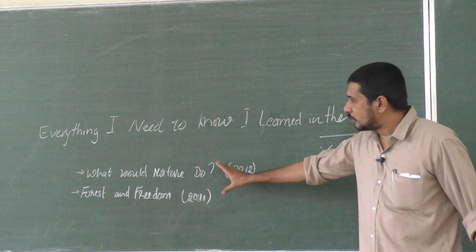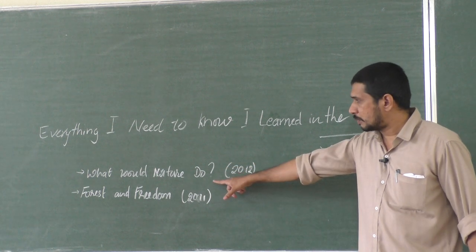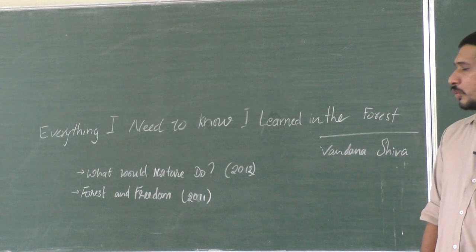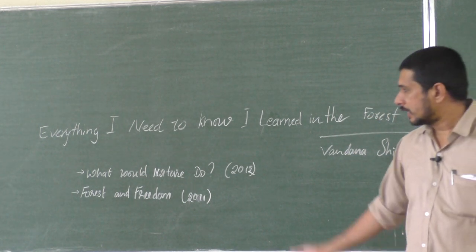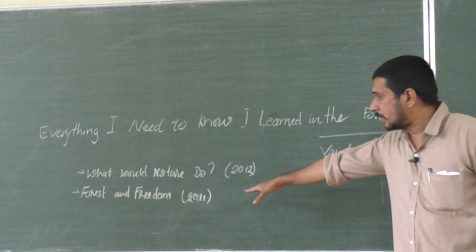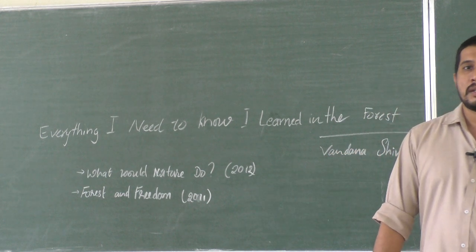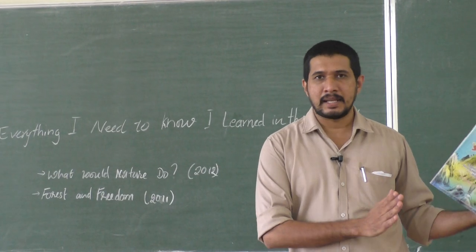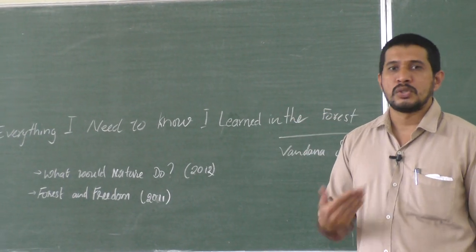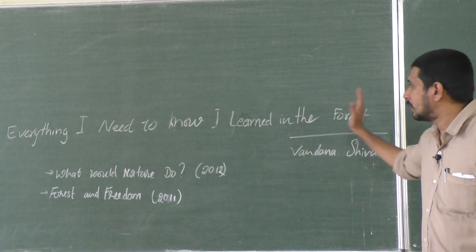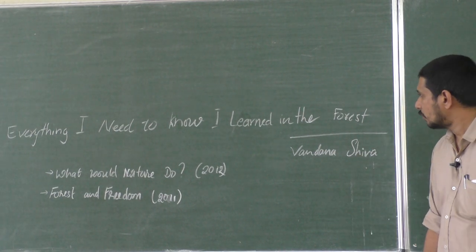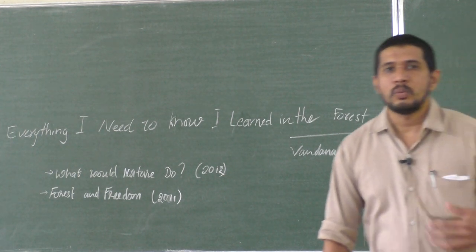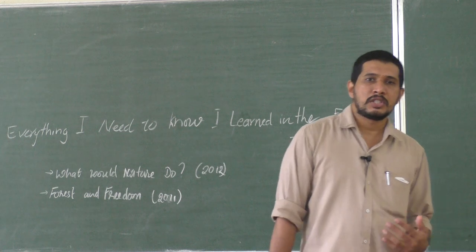This particular chapter is taken from two sources. The first part is 'What Would Nature Do,' published in 2012. The second part is from 'Forest and Freedom,' written one year earlier, in 2011. These two extracts have been given to us under the title 'Everything I Need to Know I Learned in the Forest.'